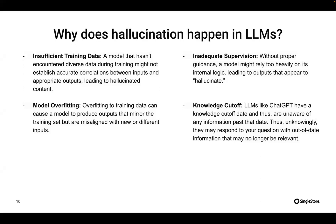Fourth, the knowledge cutoff: probe ChatGPT about a recent world event and it'll tell you it might be beyond its knowledge cutoff. In some cases, when it figures out you're asking about a topic it doesn't know, it will say so. But in other cases, it tries to answer rather than saying 'I don't know,' and the response could be hallucinated because based on its weights, it isn't able to come up with something accurate. These are the four broad sources of hallucination.